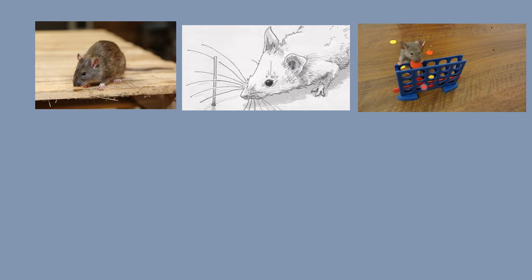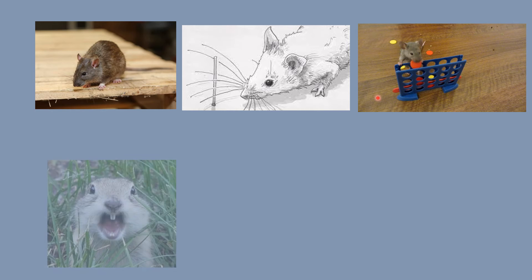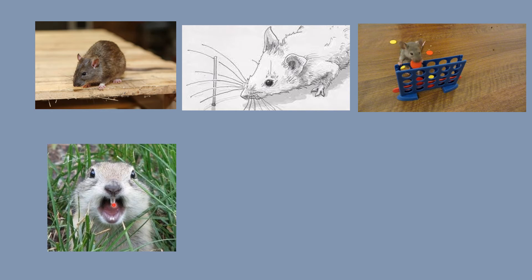Mice are very intelligent animals, children. If they are trained to do something they will learn very fast. When somebody comes close by, they run away — they are very smart like that. A mouse has white, quite sharp front teeth. They can cut into anything.